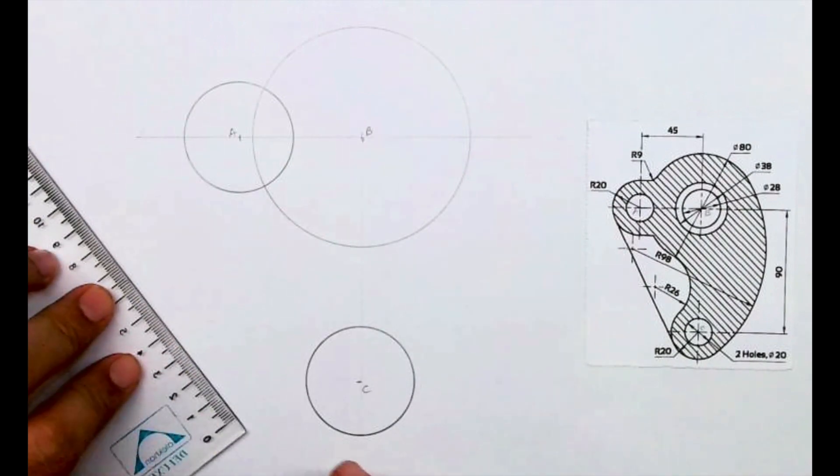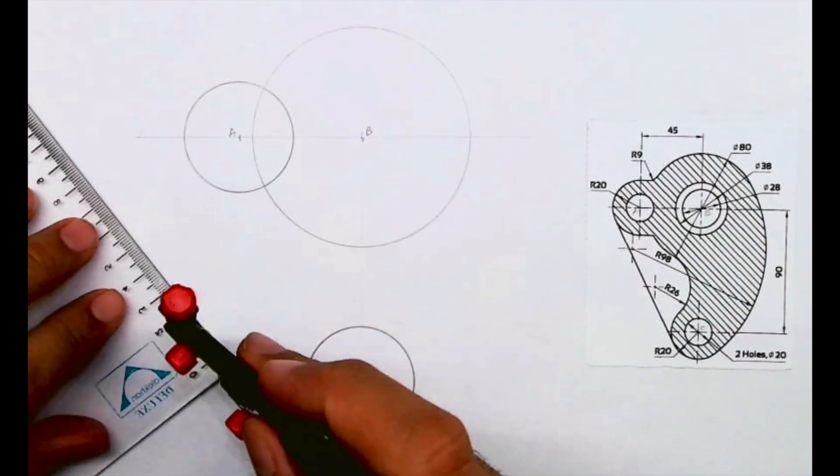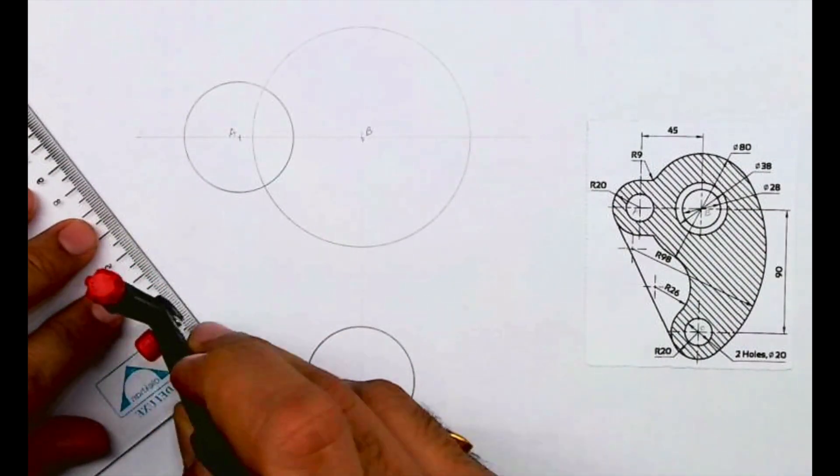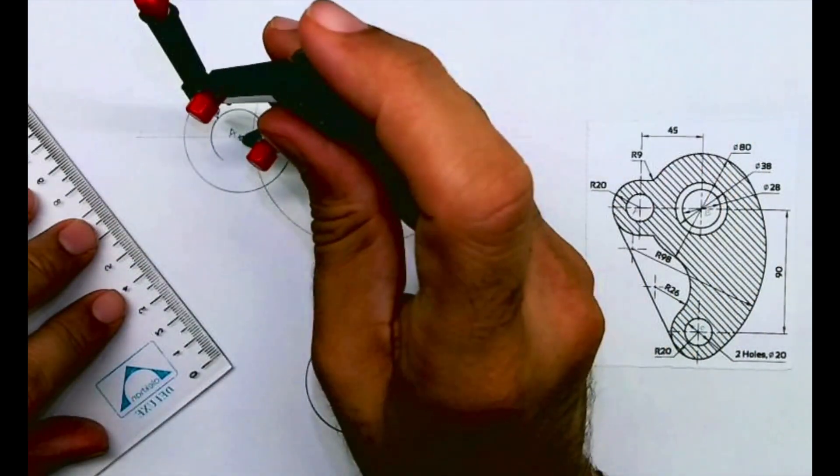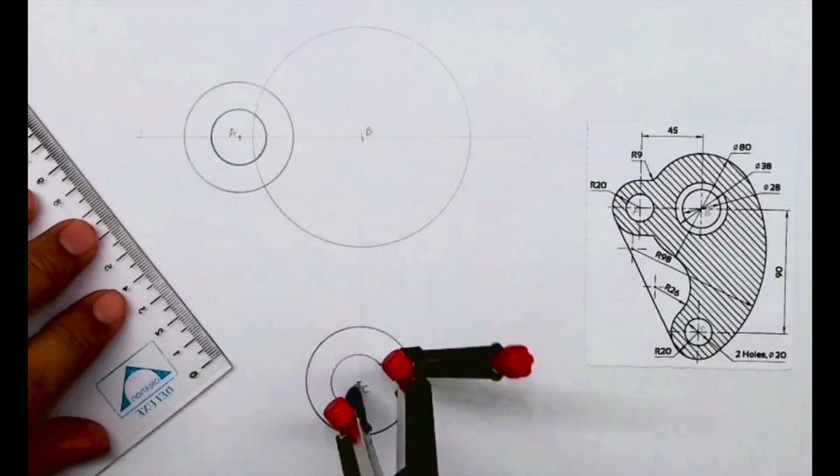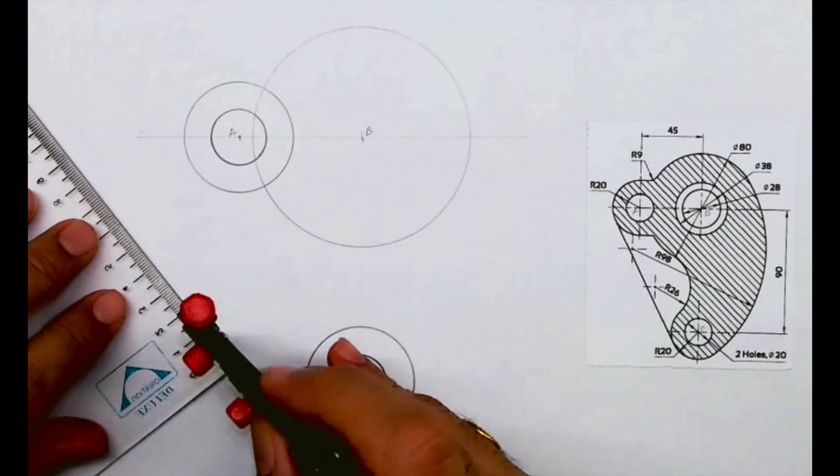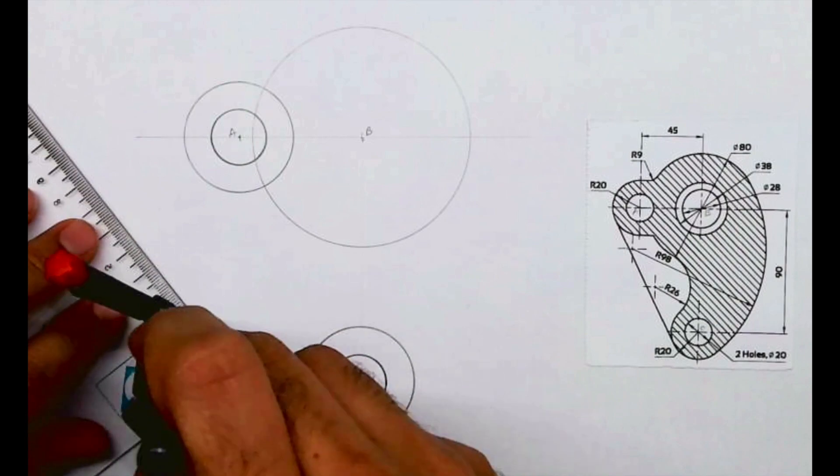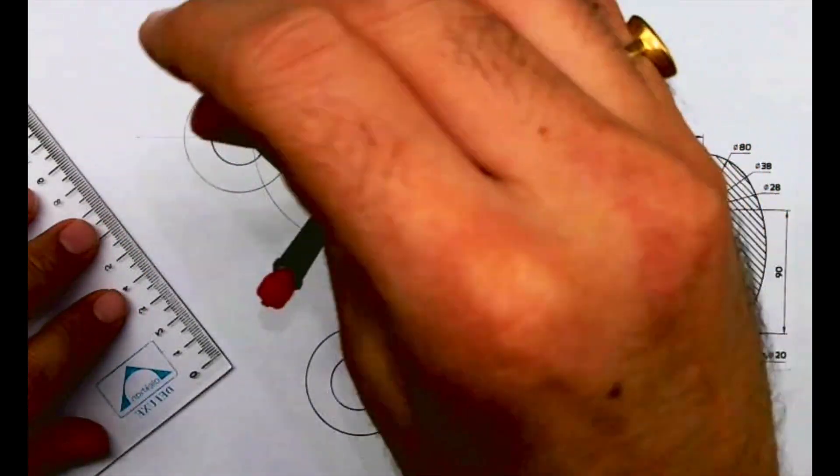Then after that we need to draw a circle of radius 10 from C also. We'll draw a circle of radius 10, then 14 and 19. Two more circles we will draw: one is radius 14 and one is radius 19.